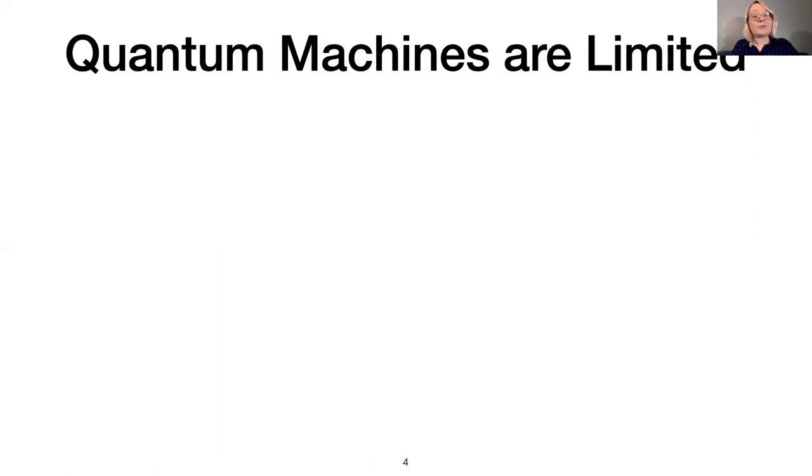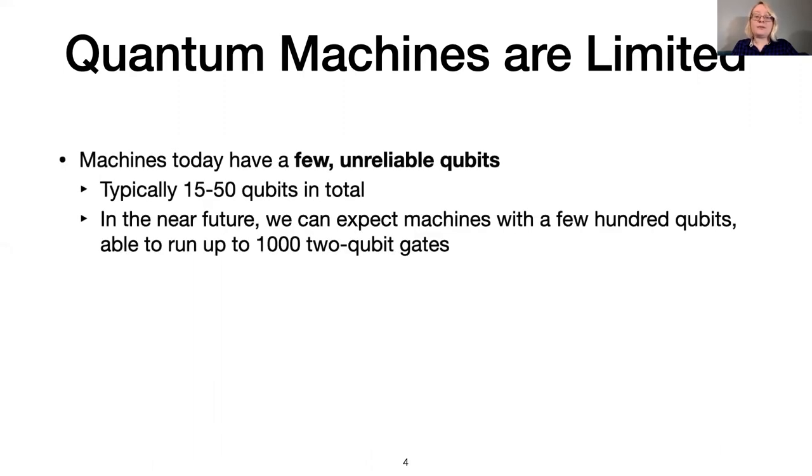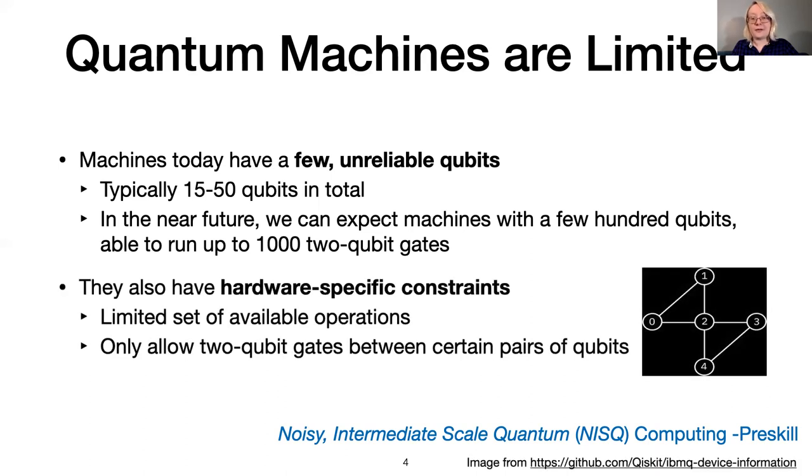And quantum programming is only made more difficult by limitations of near-term machines. Current computers are small and error-prone, typically contain no more than 50 qubits, and can run at most a few hundred two-qubit gates before results are meaningless due to accumulated error. John Preskill has described this as the NISQ, or noisy intermediate scale quantum era. Near-term machines also have restrictions on the types of programs they can run. For example, they can only perform certain technology-dependent gates, and they often only allow two-qubit gates between certain pairs of qubits. IBM's five-qubit Yorktown machine, shown on the right, allows two-qubit gates between qubits 0 and 1, but not between qubits 0 and 4.